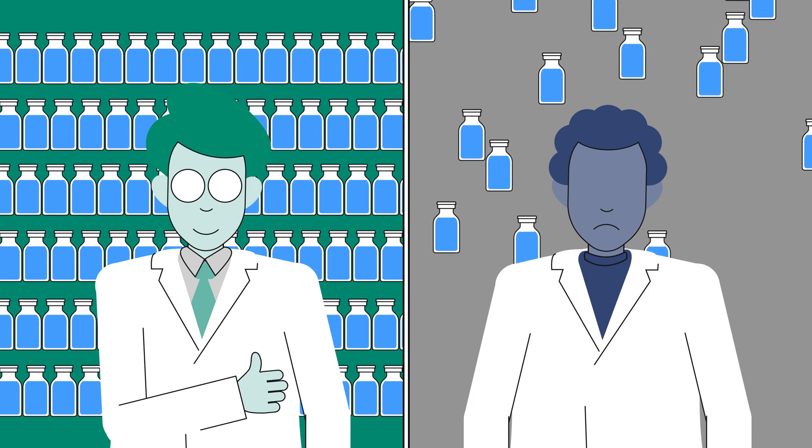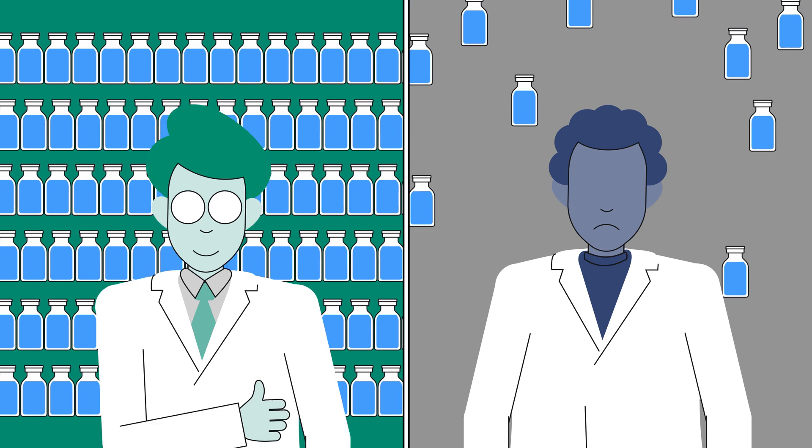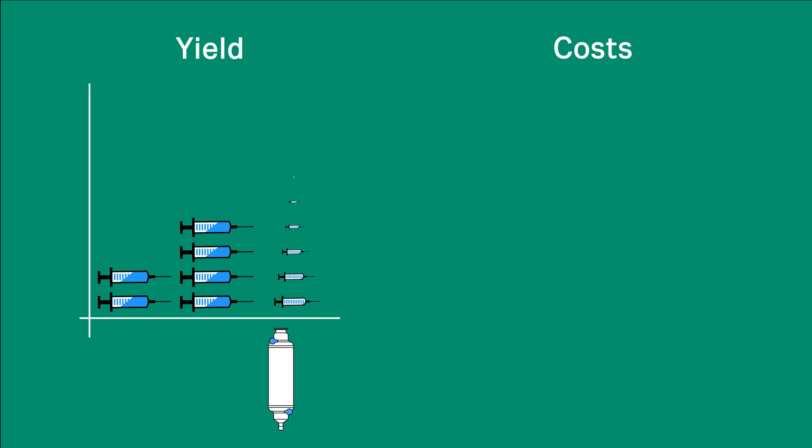It's clear, a smaller filter can make a big difference. With SUPOR Prime, you can boost batch yields, reduce costs, and make your operations easier to manage.